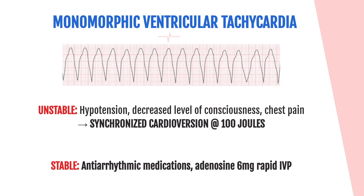Knowing whether a patient is stable or unstable matters: an unstable patient will be hypotensive, have decreased level of consciousness, or be experiencing chest pain — perform synchronized cardioversion starting at 100 joules. If the patient is stable without those signs, the ACLS algorithm points to antiarrhythmic medications such as amiodarone, or adenosine 6 mg IV push.